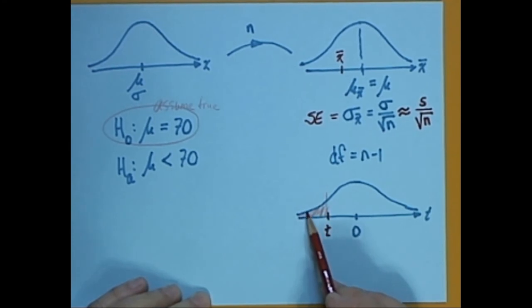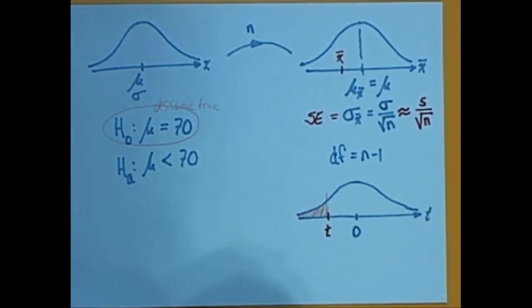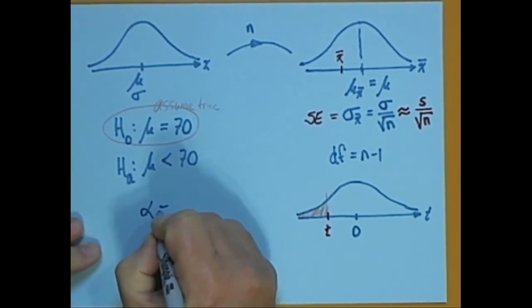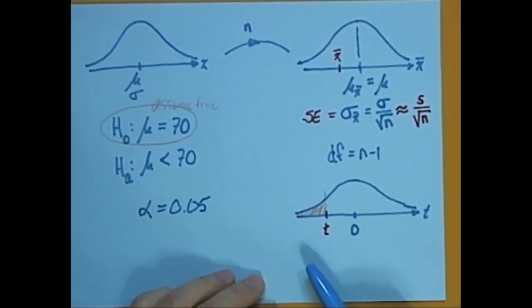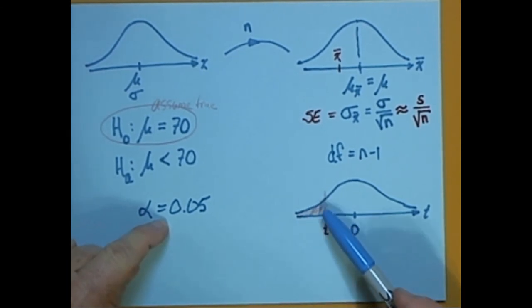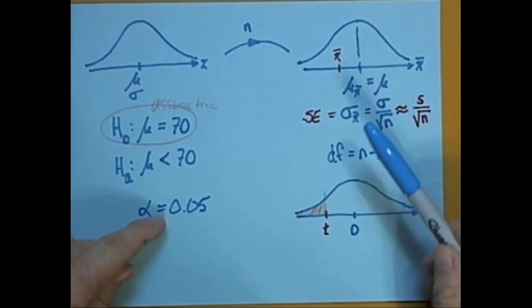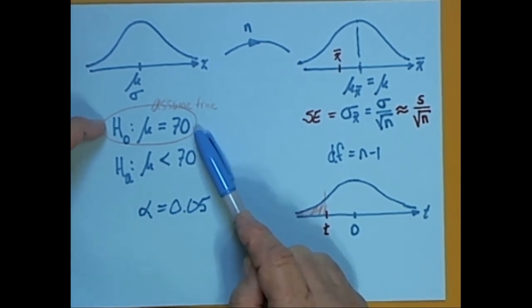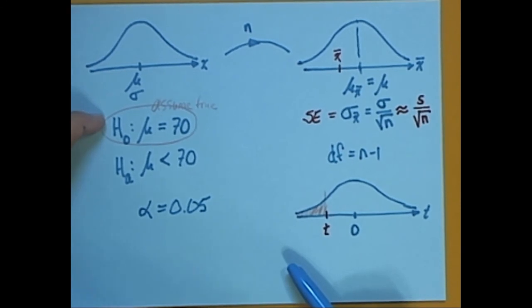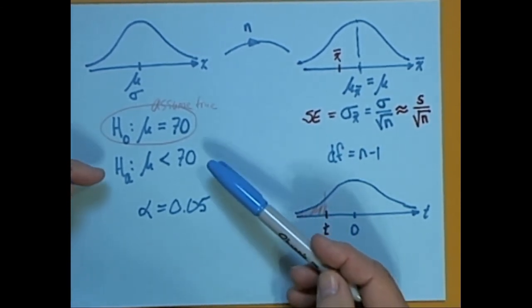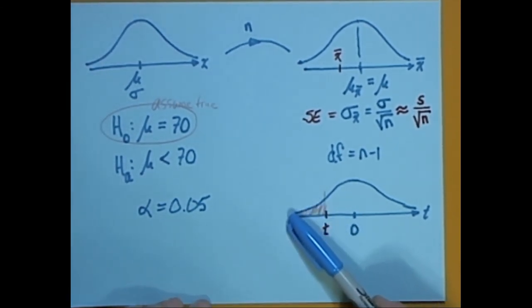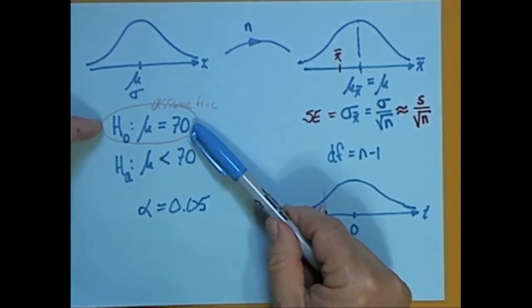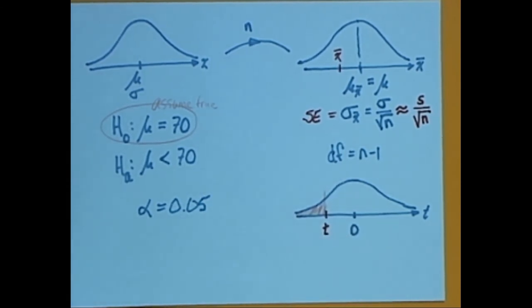We find the area below that test statistic and compare it to the alpha value — 5% if none is specified. If that area is less than 5%, this would be a very unusual situation assuming the null hypothesis is true, so we reject the null hypothesis. This provides evidence that the alternative hypothesis is true. On the other hand, if that area is greater than alpha, we fail to reject the null hypothesis and do not have sufficient evidence to support the alternative hypothesis.